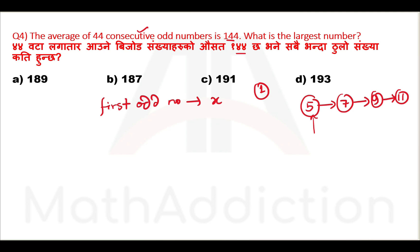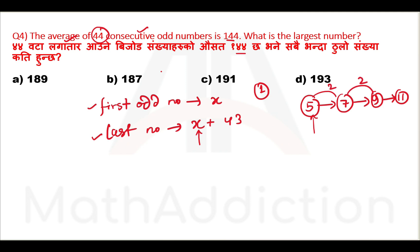Let the first odd number be x and the last odd number be x + 86 (since 43 × 2 = 86). The average equals first plus last divided by 2. With 44 terms and each consecutive odd number differing by 2, the last odd number equals x + 43 × 2.